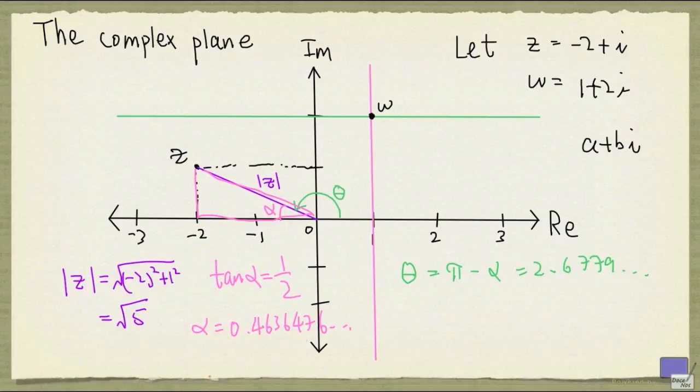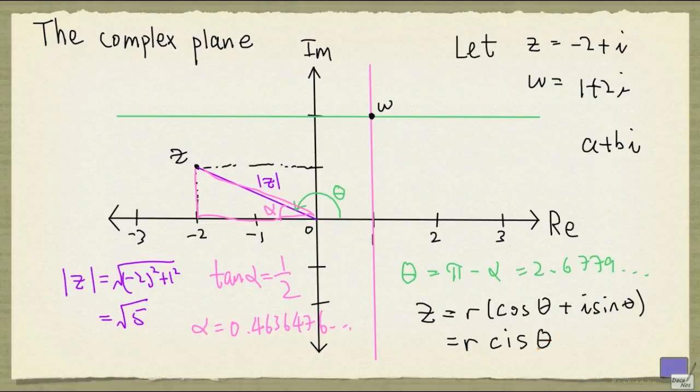We usually use r to denote the modulus, and we'll write z as r times cos theta plus i sine theta. And usually we abbreviate this as r times cis or cis of theta. So cis theta represents this expression within the brackets.